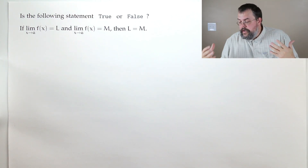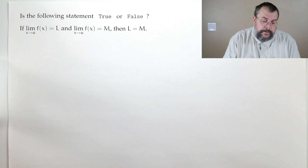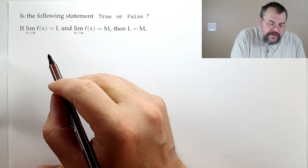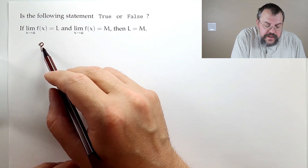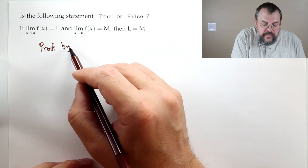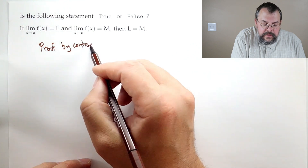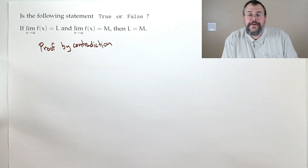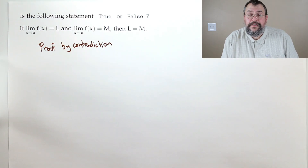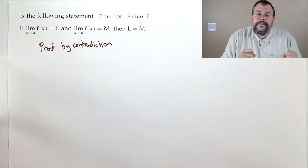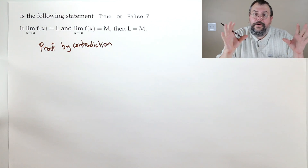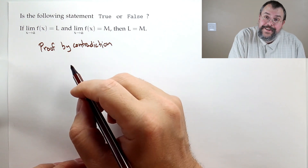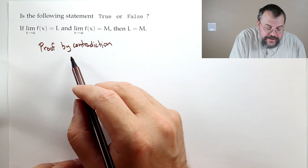It seems like something we should know, and it doesn't seem too hard to prove. Here's one of my favorite ways to do math problems: proof by contradiction. It's kind of a fun idea — think of it like arguing with a very young relative. They say 'this is how it's done' and you say 'uh-uh.' That's how I like to think of proof by contradiction.